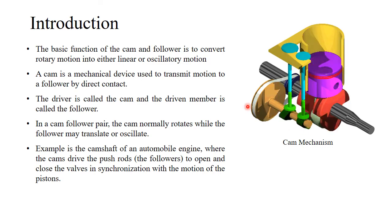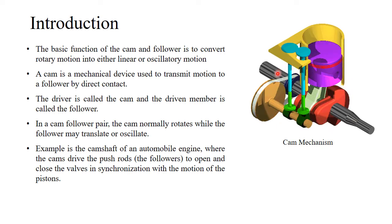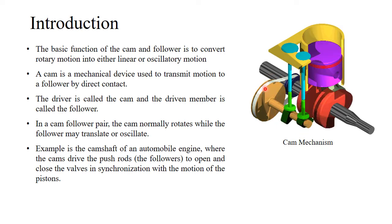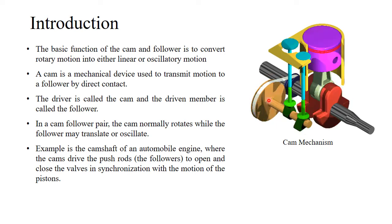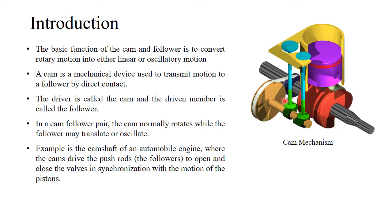The basic function of the cam and follower is to convert rotary motion into either linear motion or sometimes oscillatory motion, depending on the application. The cam is a mechanical device used to transmit motion to a follower by direct contact — not through any other system like a belt or gear, but directly. The motion is transferred directly to the follower from the cam.